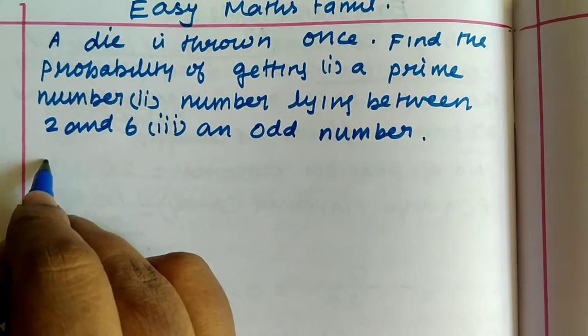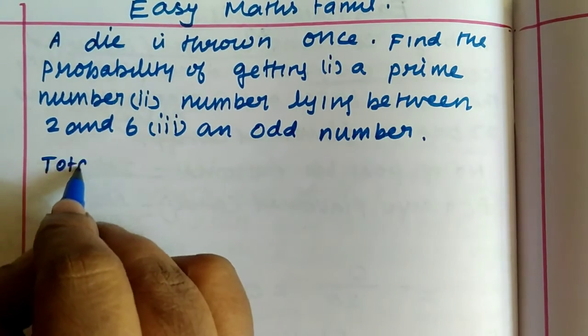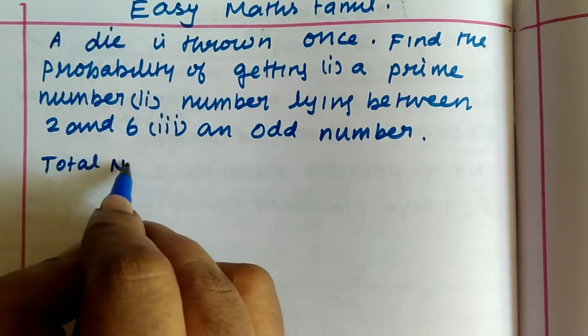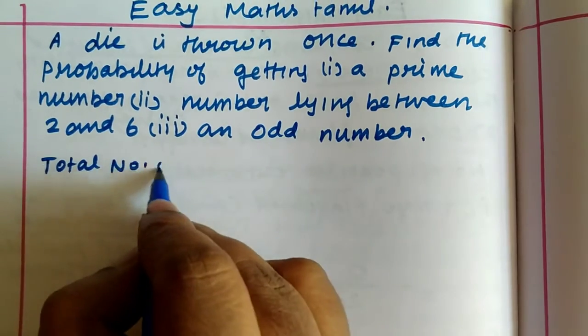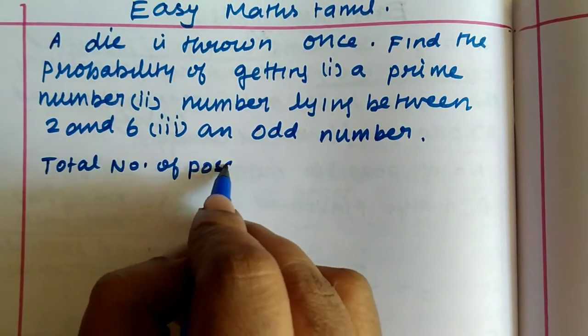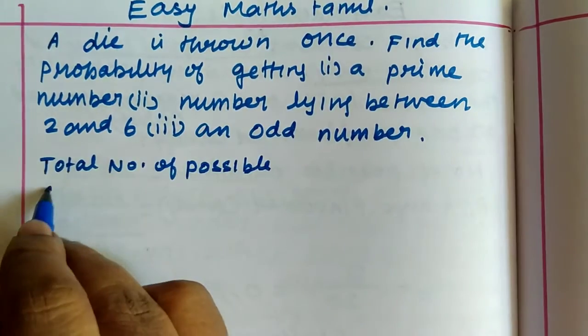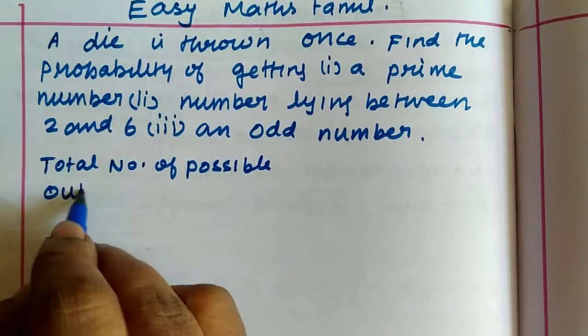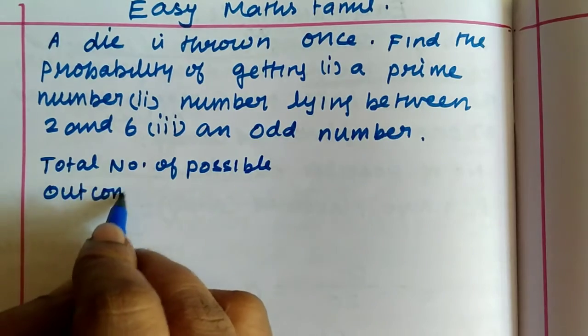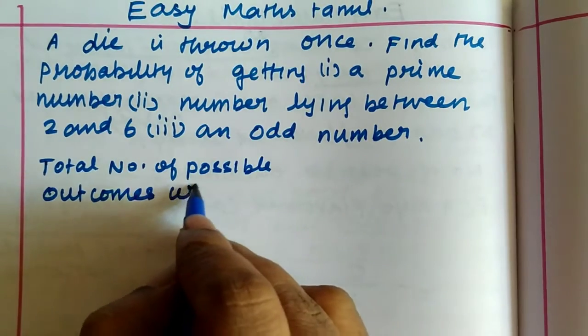A die is thrown once. Find the probability of getting: a prime number, a number lying between 2 and 6, and an odd number. The total number of possible outcomes when a die is thrown once is 6.